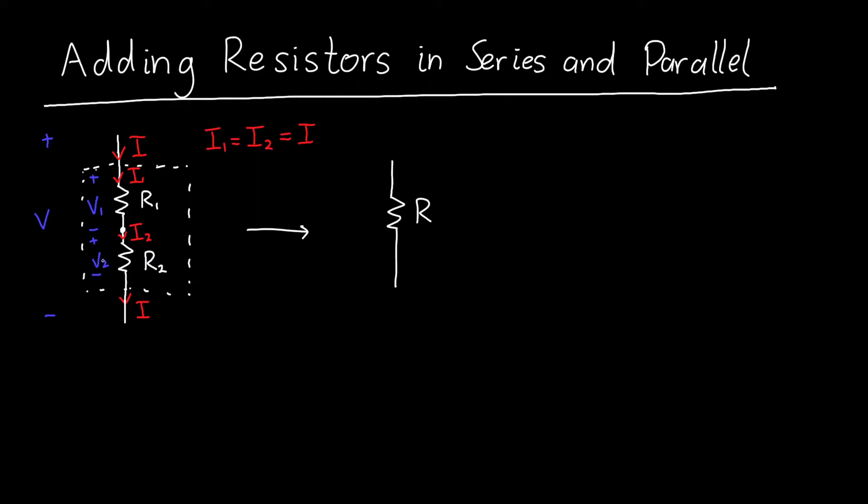So if I write that out in equation form, V is equal to V1 plus V2. Now we know that resistors are objects that obey Ohm's law, that is V is equal to I times R. Another way of writing Ohm's law is that R is equal to V over I.